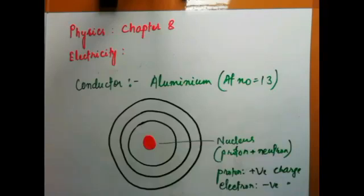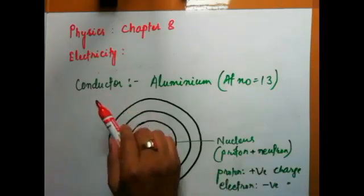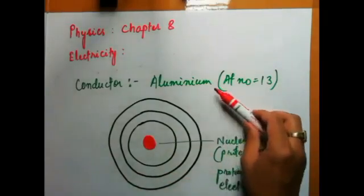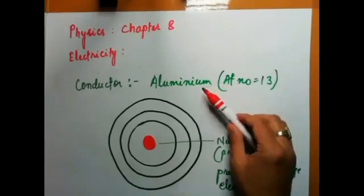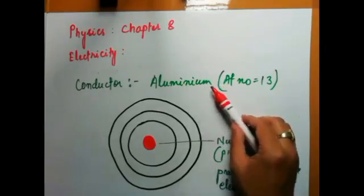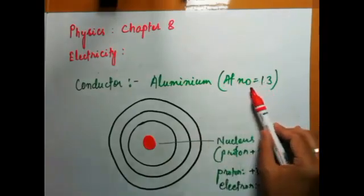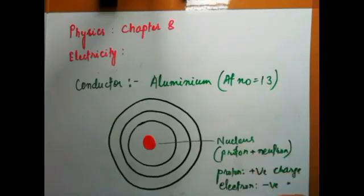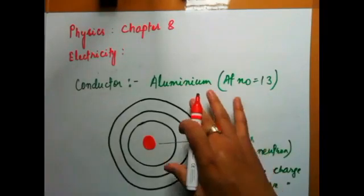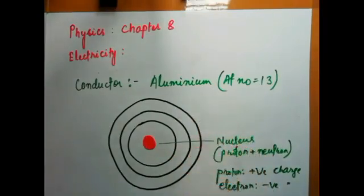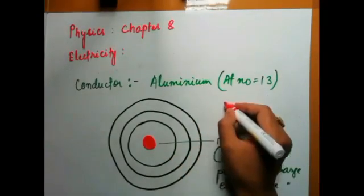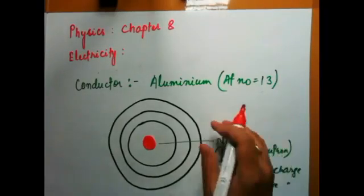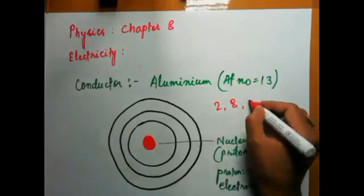There are conductors, semiconductors, and insulators. A conductor example is aluminum. Aluminum has atomic number 13, so the number of protons equals the number of electrons. Its electronic configuration is 2, 8, 3.